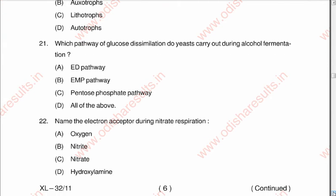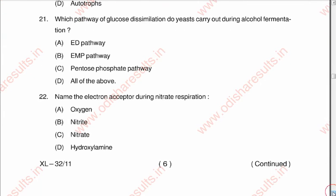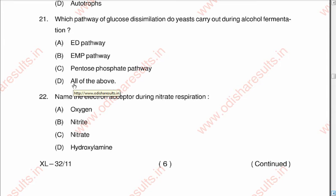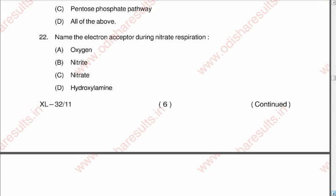Question number twenty-one: Which pathway of glucose dissimilation do yeast carry out during alcohol fermentation? A: ED pathway, B: EMP pathway, C: Pentose phosphate pathway, D: All of the above. The correct answer is A: ED pathway.